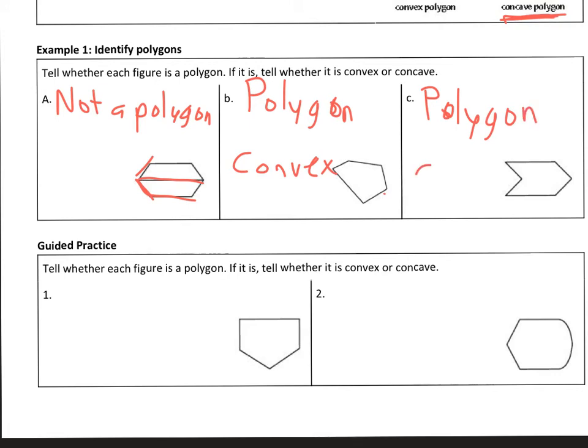This one is concave, and the reason it's concave - you see this little section right here, I can go through and pass through that polygon and hit the interior at two different points.